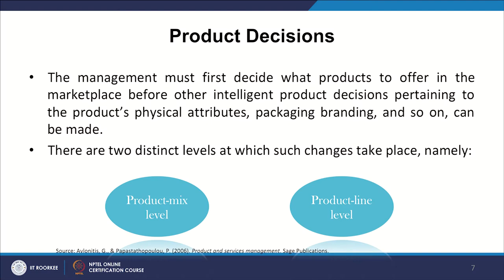Now let me take you to product decisions. Management must first decide what products to offer in the marketplace before other intelligent product decisions pertaining to physical attributes, packaging, branding, and so on. Decisions are taken at two distinct levels from a strategic perspective. A product manager decides — we are going for this today — and that can be at the product mix level or product line level. In this session the remaining discussion will be around product mix level, and in subsequent sessions we will cover product line levels.